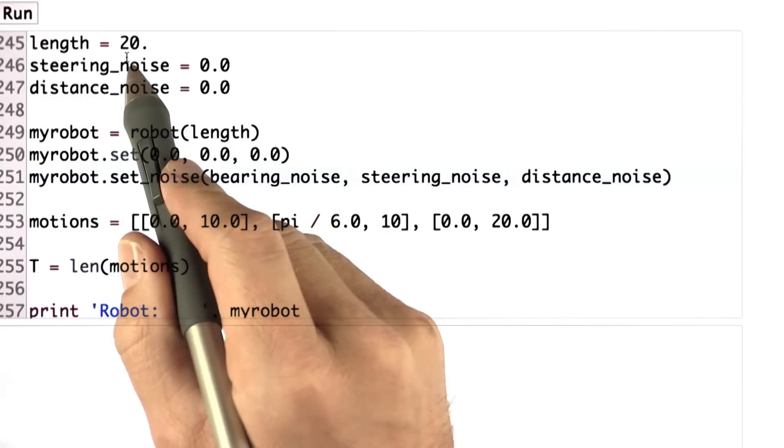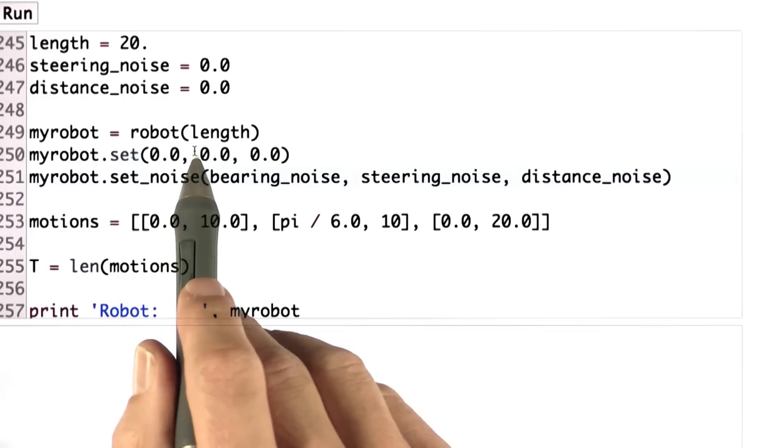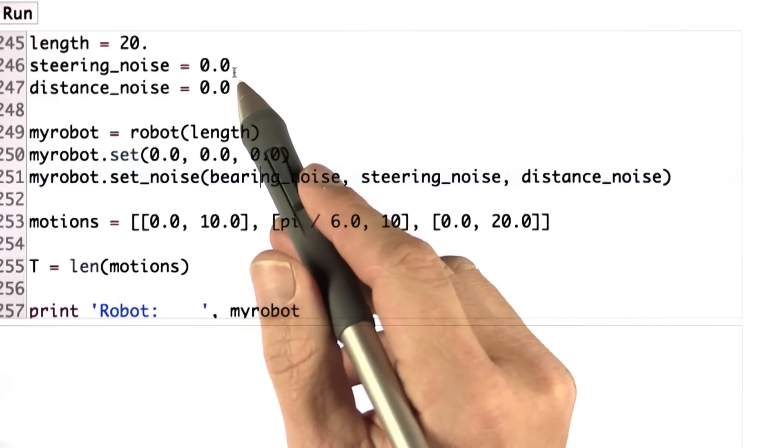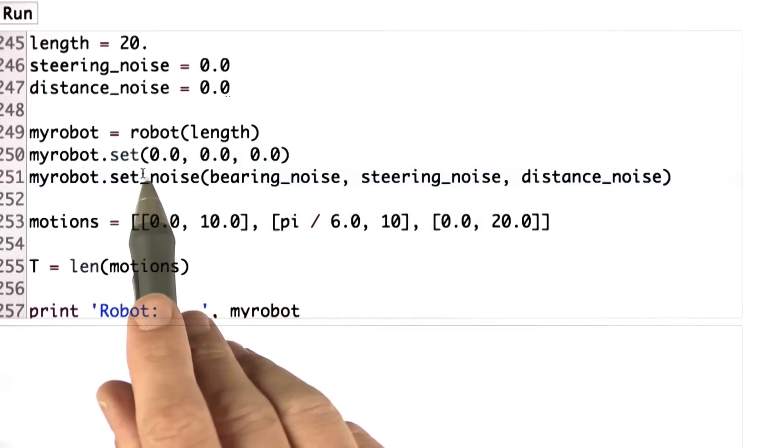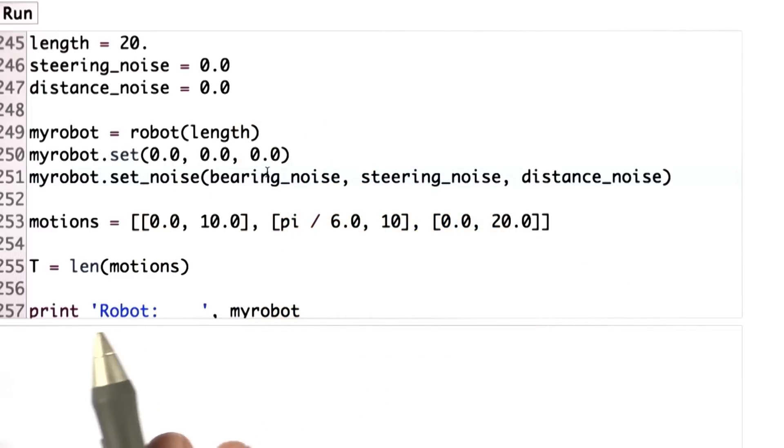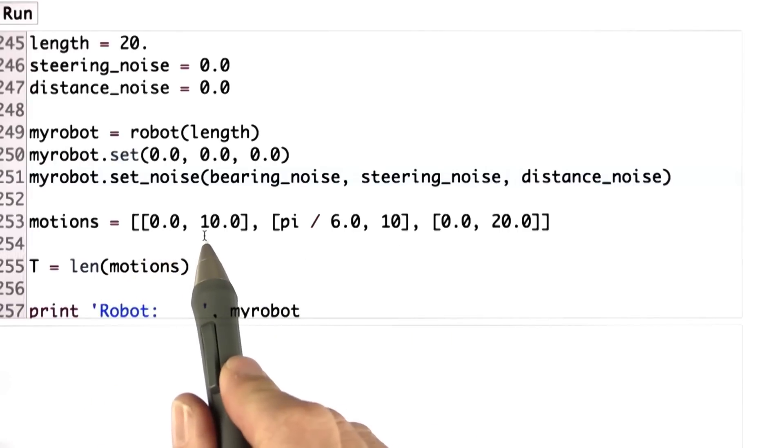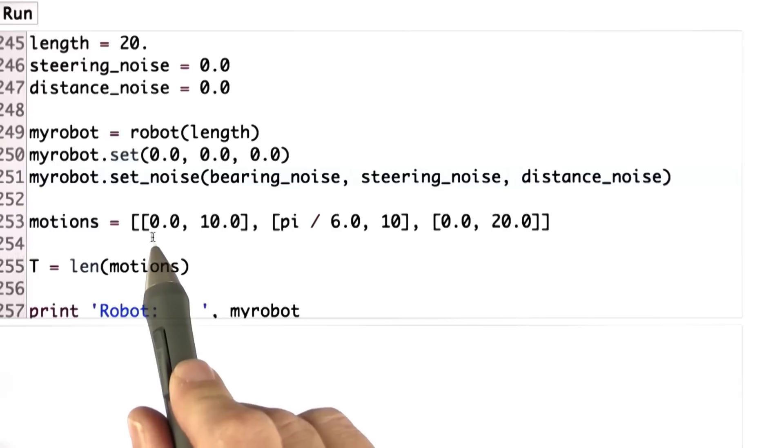And in this case, I just want you to practice the motion model. So we assume a length of the robot of 20. We initialize the robot with this length parameter. And for this first iteration, we assume no steering noise and no distance noise. I set the robot to 0, 0, 0 in the beginning. And then I cache away a number of motions. And the way to read those is this robot is moving by 10 in total with a steering angle of 0.